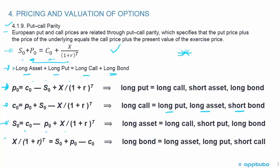For a long bond position, you move the call over to the left-hand side, so you'd be long the asset, long the put, and short the call. It all comes down to memorizing this formula for European put-call parity: put price plus price of the underlying equals call price plus present value of the exercise price. This is the only slide for this LOS, and then we move into practice questions.